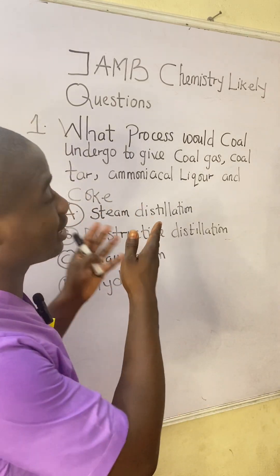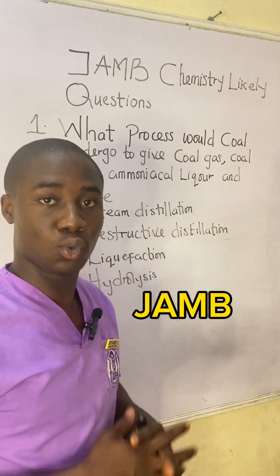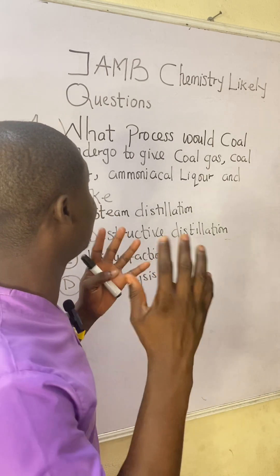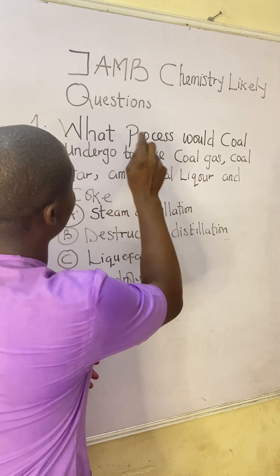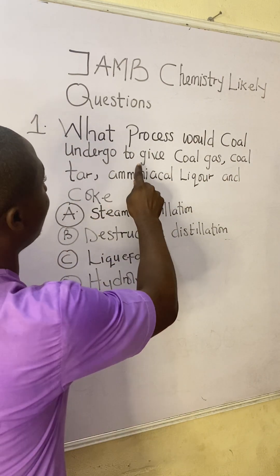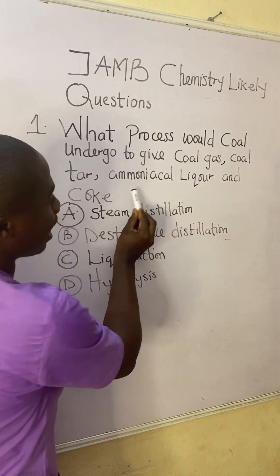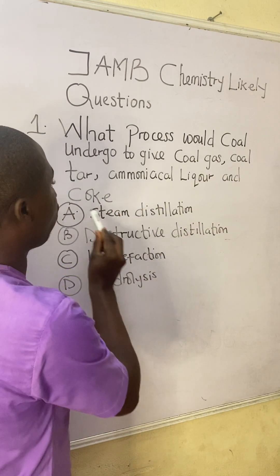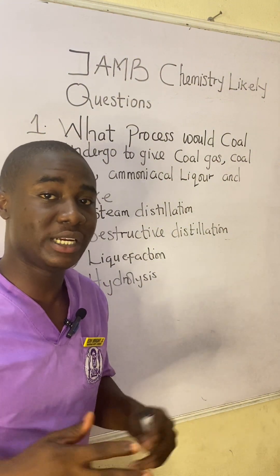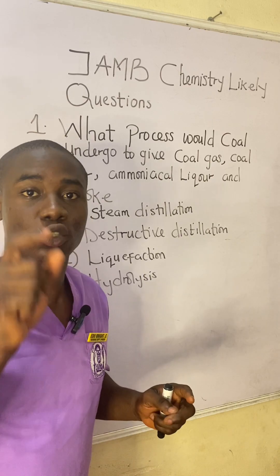Let's say we came across this question in the JAMB exam — how do we solve it? It is very easy. Let's solve it together. The question says: what process would coal undergo to give coal gas, coal tar, ammonia liquor, and lastly coke?